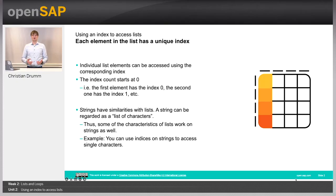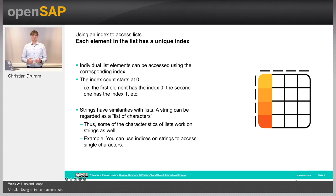Hello, welcome to week 2, unit 2: using an index to access the elements of a list. In the previous unit, you learned what lists are and how we can create them in Python. In this unit, we will look at how we can access the individual elements of a list. In Python, as in most programming languages, indices start at 0, so the first element has index 0, the second has index 1, and so on. Furthermore, we will see that strings are quite similar to lists — you could call a string simply a list of characters — and we can use indices to access the individual characters of a string.